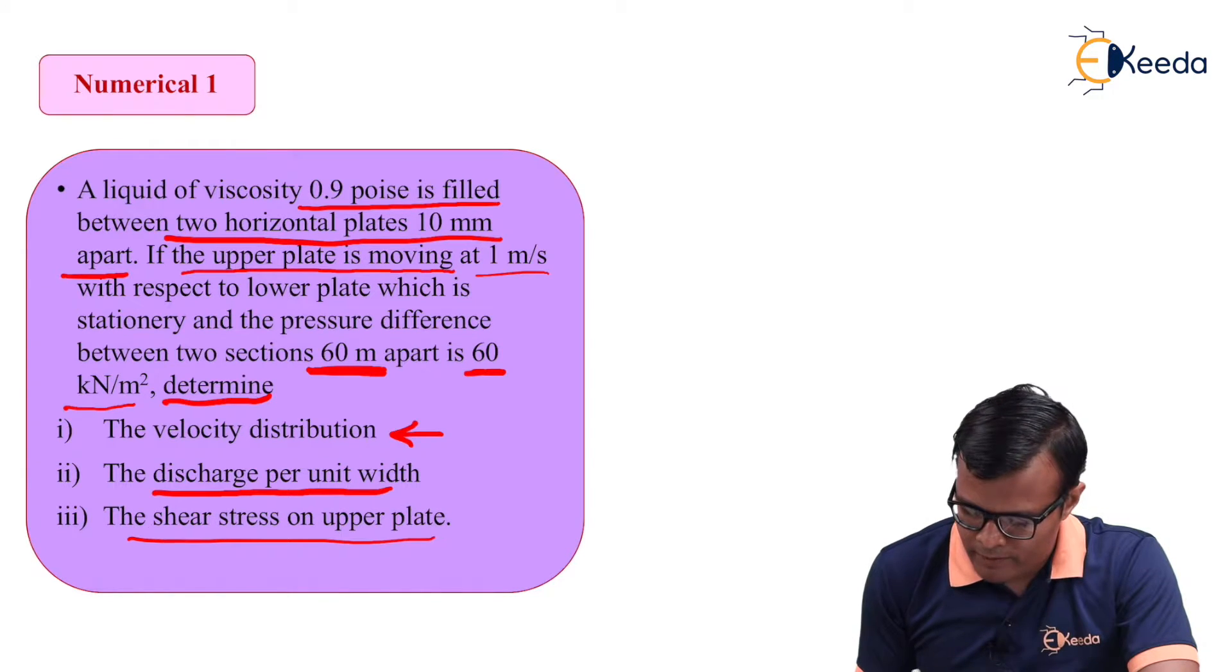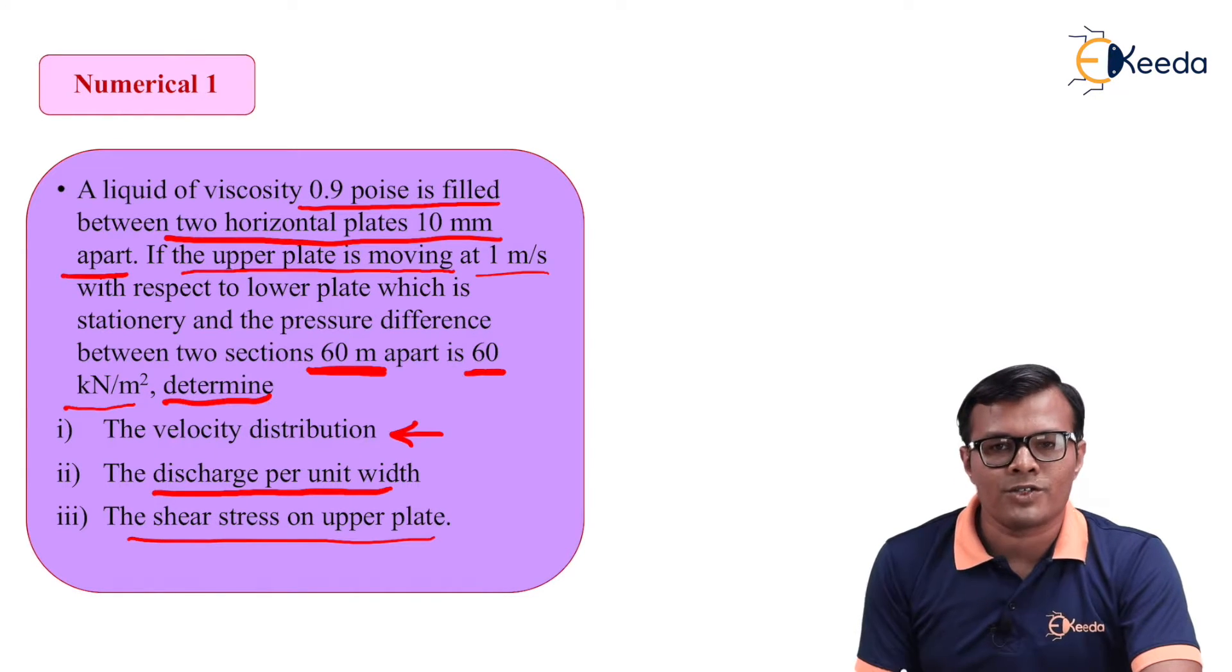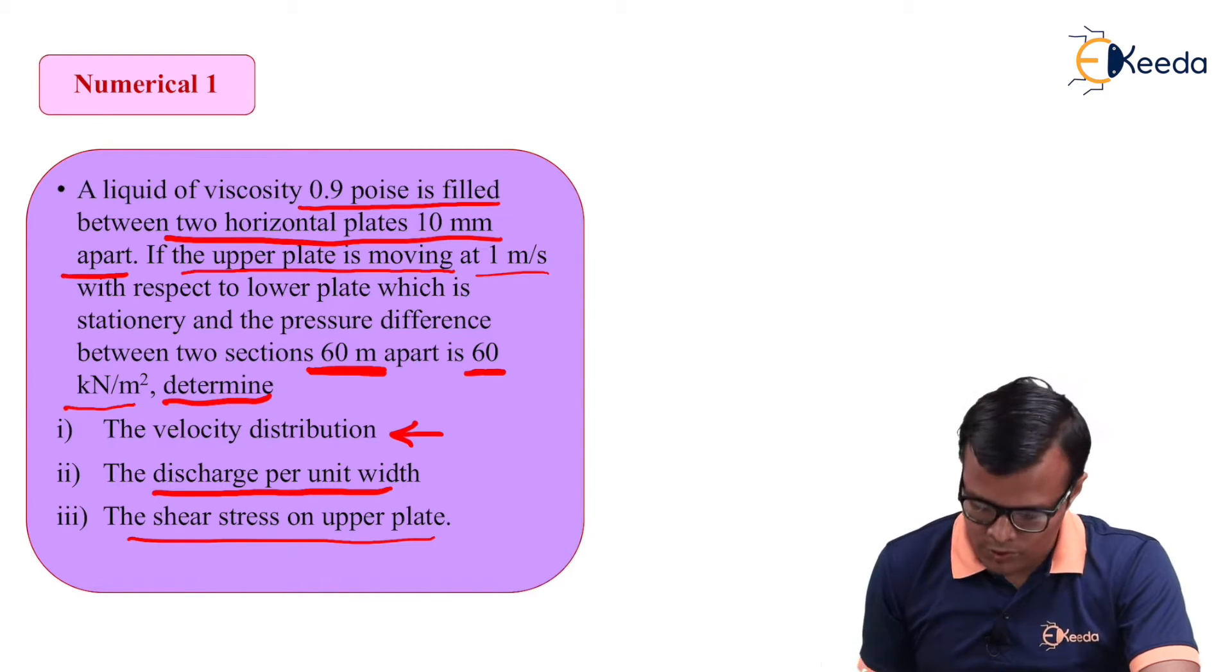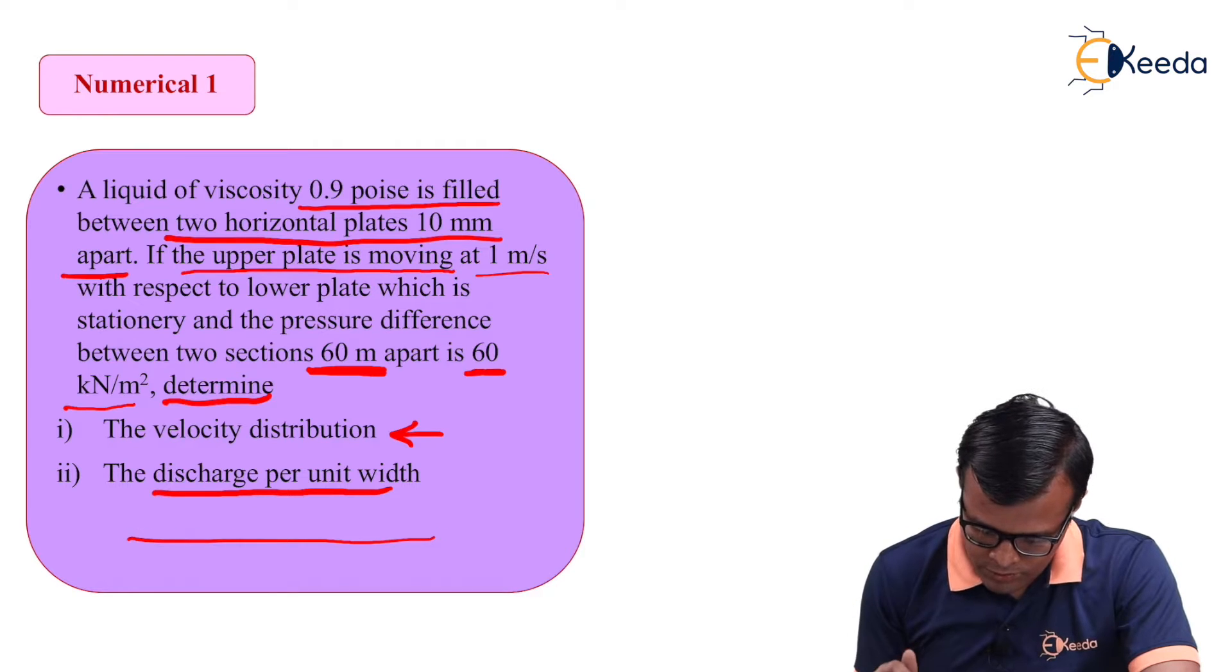Let's look at the velocity distribution. Next, shear stresses on upper plate. In derivation, we have denoted these shear stresses by tau nought. So, it is asked to calculate tau nought.